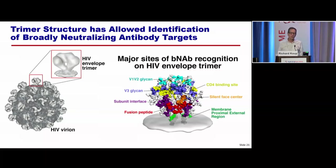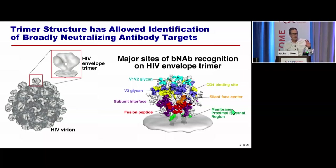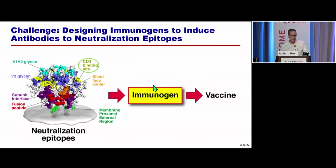The atomic structure has also allowed us to identify sites on the virus envelope protein that are targets of broadly neutralizing antibodies. We now know of at least seven sites on the HIV envelope targeted by broadly neutralizing antibodies, indicating these should be where we target our vaccines. We now need to develop immunogens that will stimulate responses to these different sites.